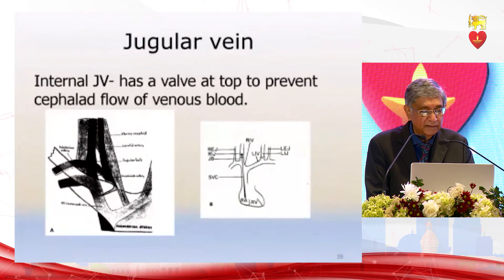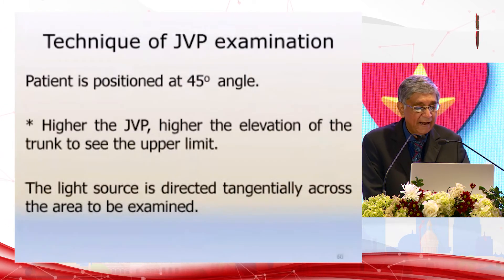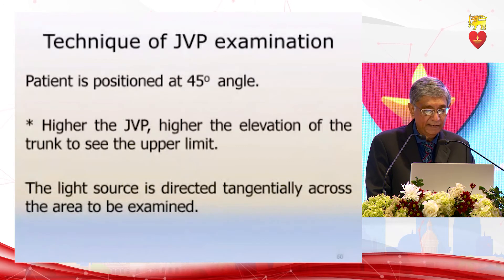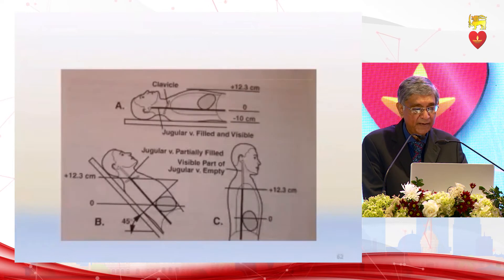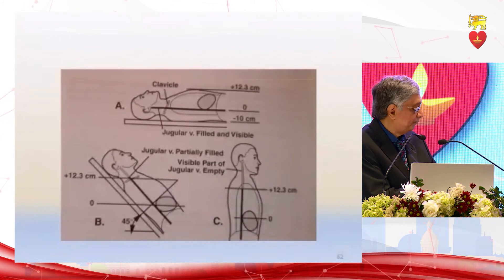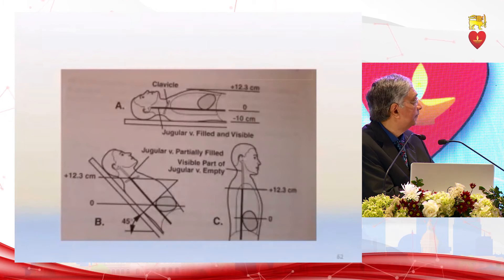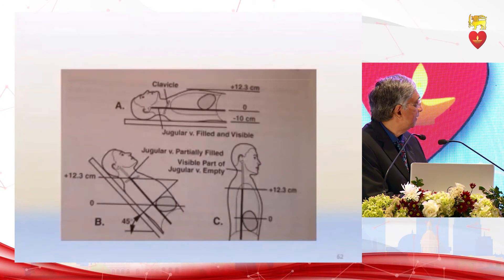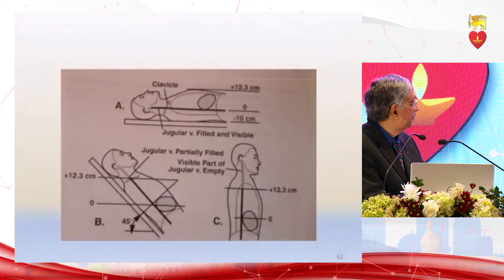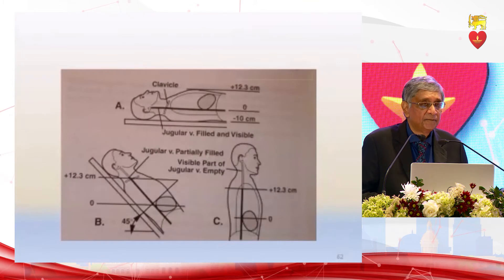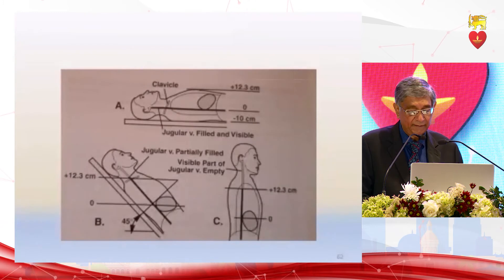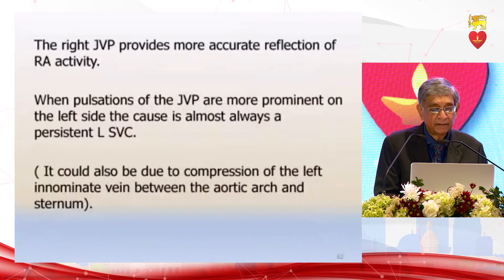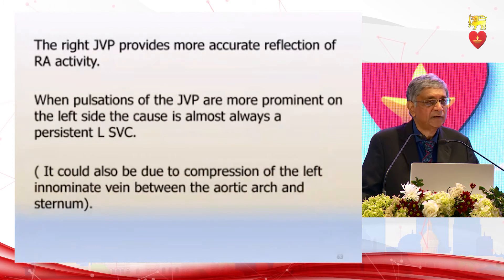The JVP starts between the two heads of the sternocleidomastoid and goes upward. With the patient at 45 degrees using tangential light, it is best seen when lying supine. At 45 degrees the JVP should be just one centimeter above the clavicle. When the patient is seated upright, the JVP becomes invisible. Therefore unless you examine the patient at 45 degrees, you may miss an elevated JVP.